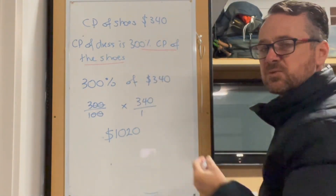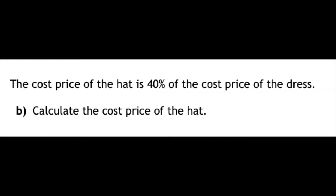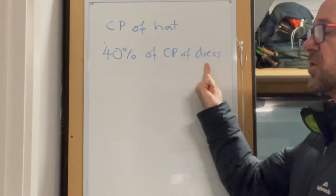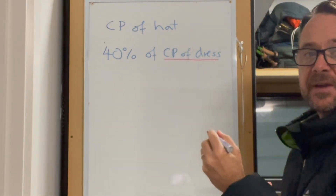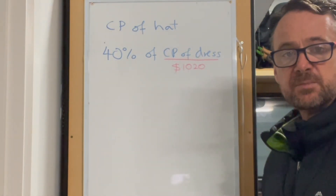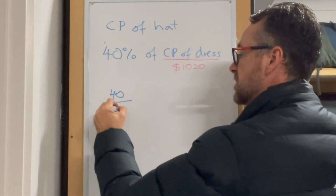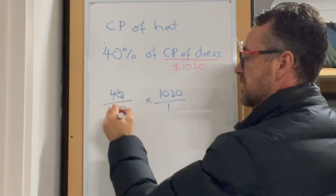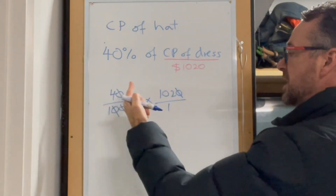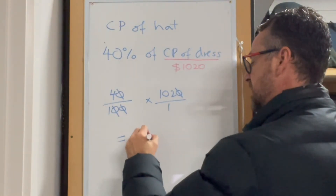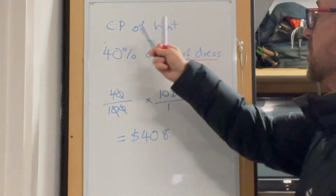The next question tells us to find the cost price of the hat, which is 40% of the cost price of the dress. The cost price of the dress we found in part A is $1,020. So it's 40 over 100 times $1,020 — cancelling zeros gives us 4 times 102, which is $408 as the cost price of the hat.